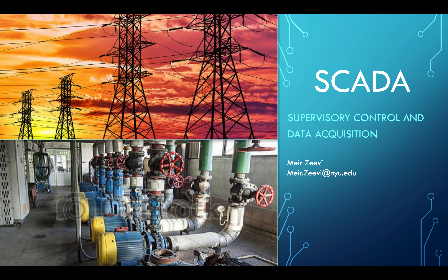SCADA usually helps big organizations responsible for a large territory to control and monitor different devices. For example, it helps electric companies control distribution lines and grid substations, allowing them to detect a malfunction hundreds of miles away, allocate power to different distribution lines, and gain insight into a specific system. It can be very critical because we can send control traffic into it, which is why it's very important for cybersecurity.